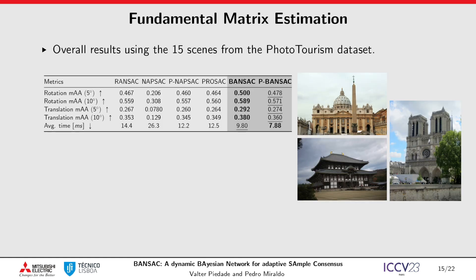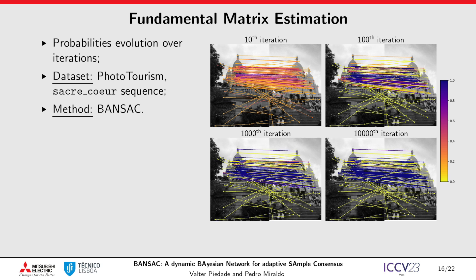Next, we show overall results across all sequences from the phototourism dataset for a fundamental matrix estimation problem. Overall, BANSAC is the most accurate and P-BANSAC is the most efficient. In this example, we show the evolution of the inlier probabilities. There are some clear outliers, and we can observe that those have a low inlier probability.